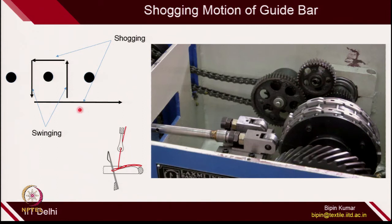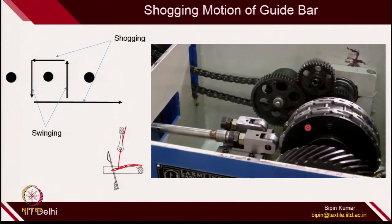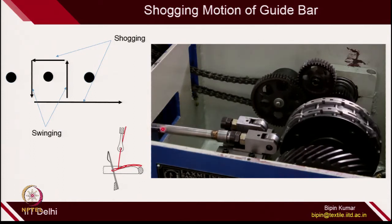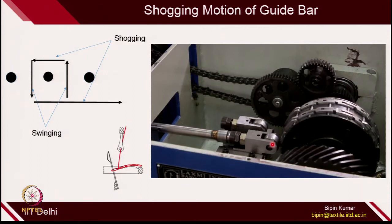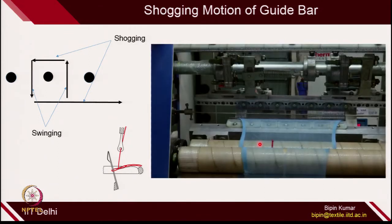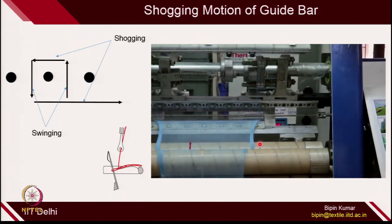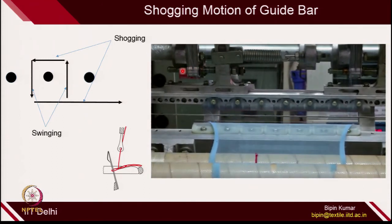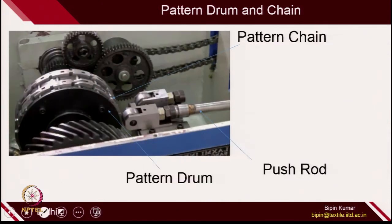The shogging motion, or lateral displacement, is given to the guide bar with the help of pattern drum revolution. On the pattern drum there are chain links which provide depression and elevation to the follower, which is connected with the guide bar via a push rod. Whenever there is an elevation, the follower pushes the guide bar to the left. When there is a depression, with the help of a spring system, the guide bar moves to the right direction.